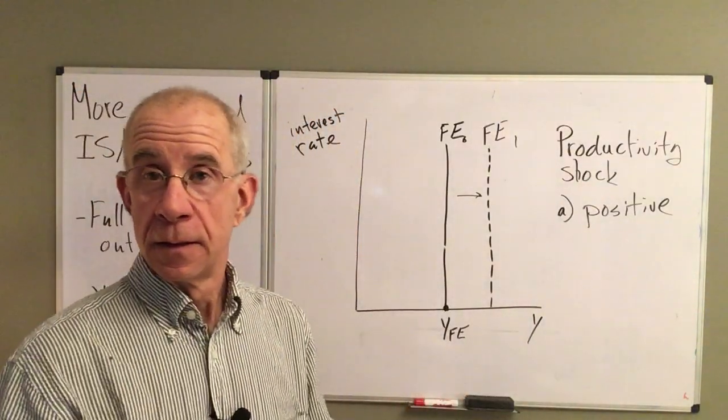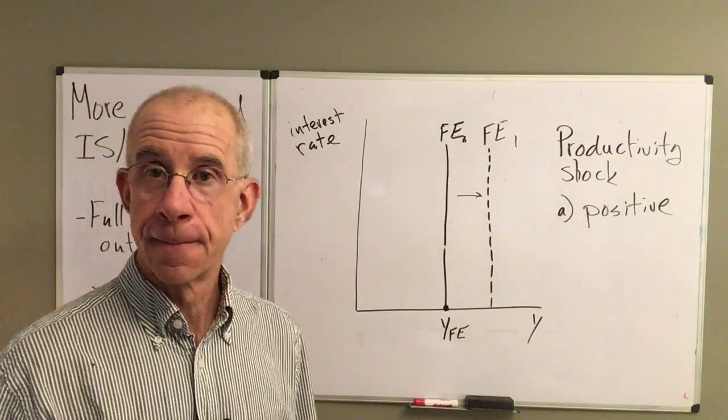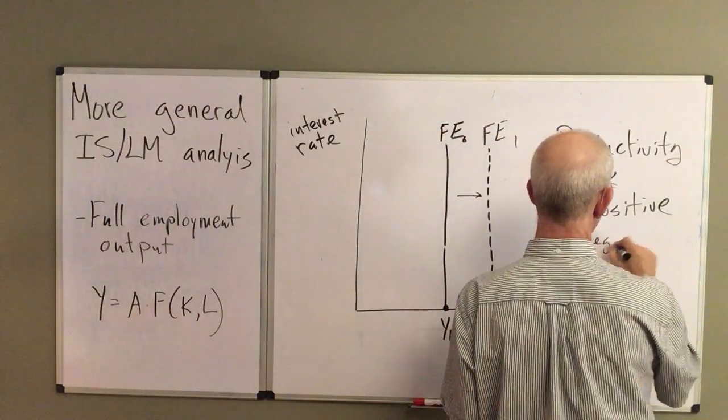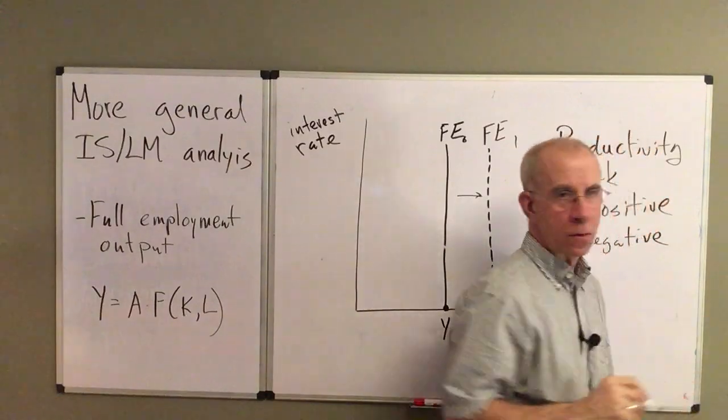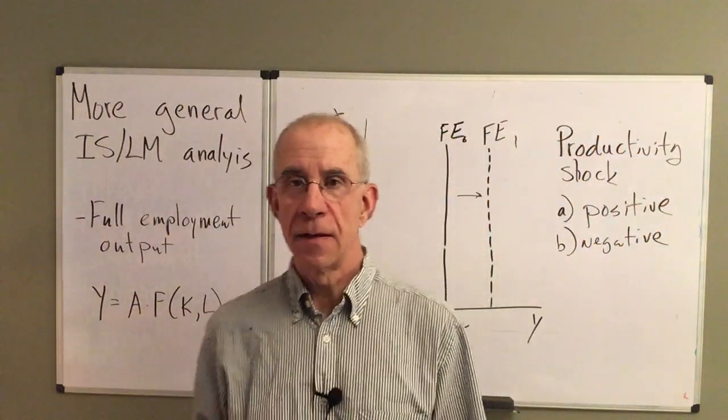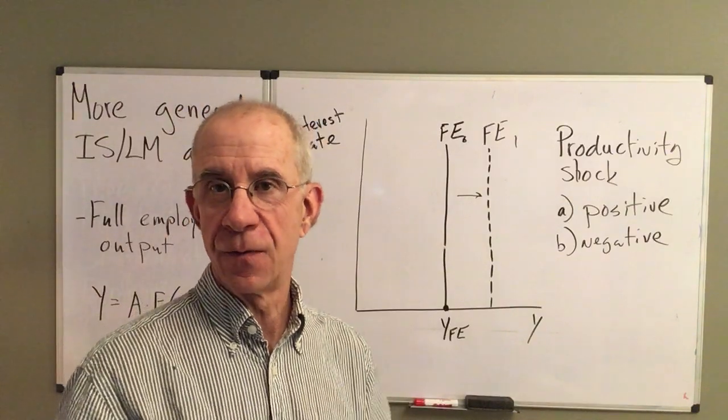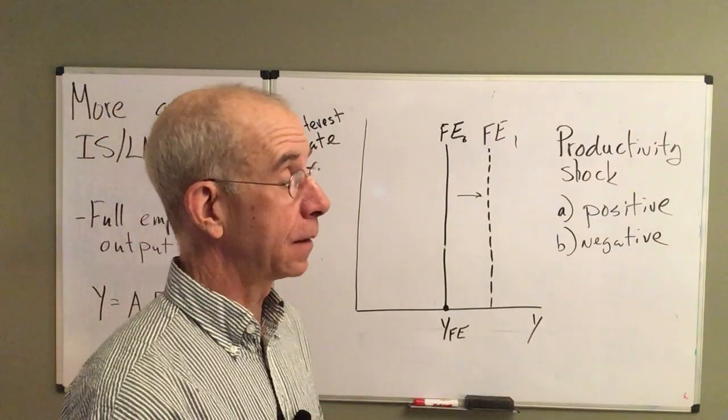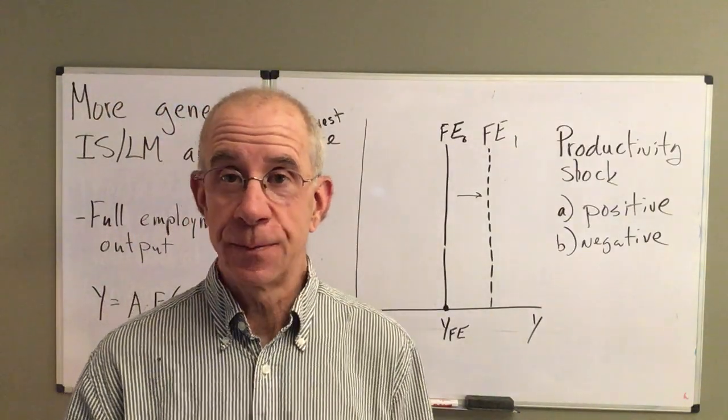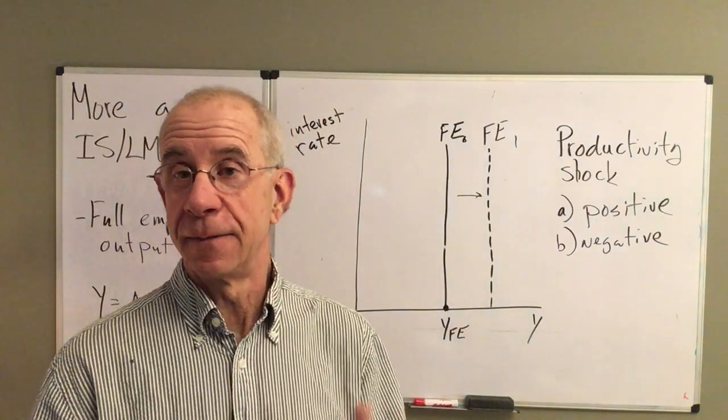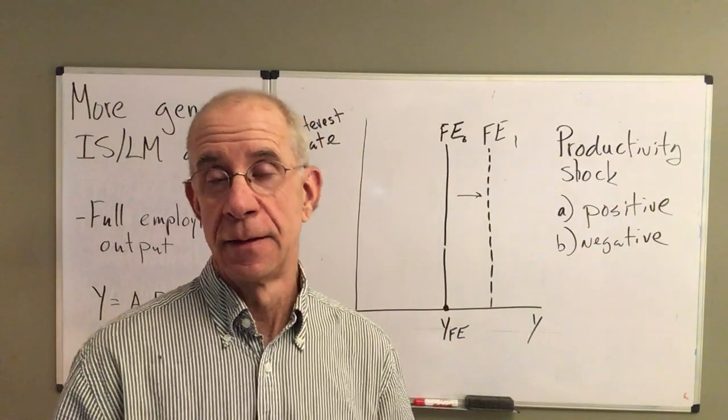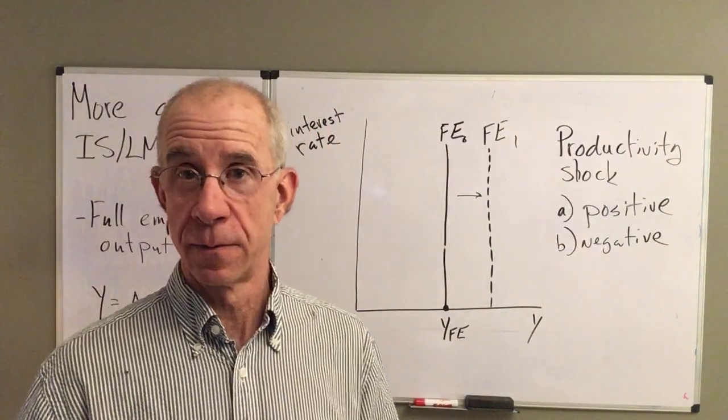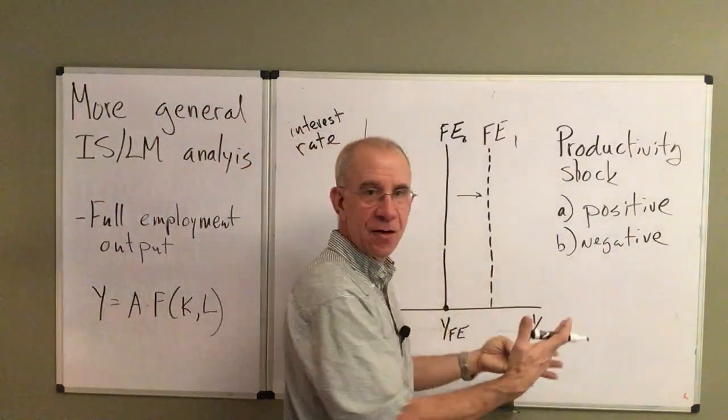Something underlying the economy has changed. You could have some sort of negative shock that changes the ability of the economy to produce. If you had a - I mean, I hate to call this a productivity shock - but if you had a widespread disease that reduced the number of workers in the economy or a war, some sort of negative productivity shock.